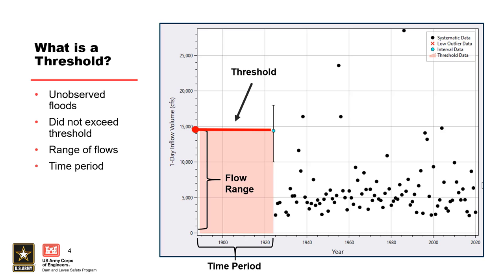By assigning this perception threshold from 1889 to 1924, we are concluding that if there had been a flood greater than 14,400 CFS during this time period, that flood would have been measured or recorded. Since no floods were observed or documented, this means that all of the annual maximum flows during this period must be less than 14,400 CFS. In other words, when we do not have observations or data during a period of time, we can still infer some information about the magnitude of floods that occurred during that time period. This is modeled in RMC Best Fit using a perception threshold.